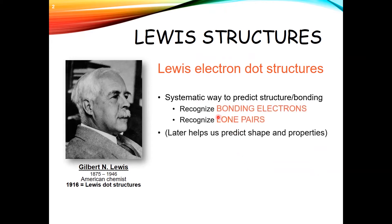In this we're going to recognize bonding electrons and recognize lone pairs, and you're going to learn how to look at an atom and figure out from its valence electrons how many bonds it's going to form. Later, it'll help us predict shapes and properties. Lewis dot structure is a useful approximation of what's going on. It's not actually going to work in every system, or at least its predictive powers won't work in every system.